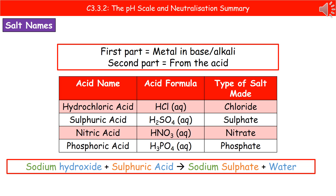The way we know the name of that salt is by using information from our reactants. The first part of the salt name is always the name of the metal in the base or alkali — here, our alkali is sodium hydroxide, so the metal is sodium, and we write sodium. The second part comes from the acid. Sulfuric acid always makes a salt ending in sulfate, so the salt is sodium sulfate. If it had been hydrochloric acid, as you can see from the table, that always makes a chloride — so it would be sodium chloride. Nitric acid gives sodium nitrate; phosphoric acid gives sodium phosphate. You need to learn those four key acids and the type of salt each makes.